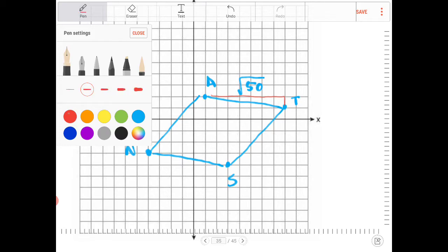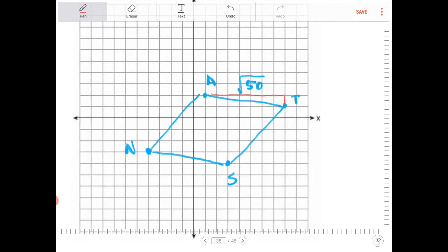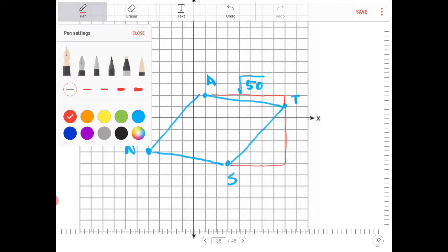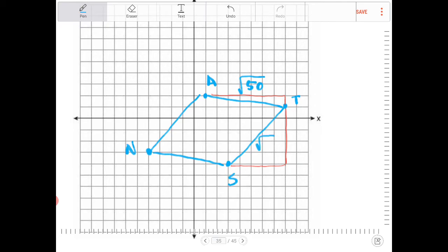And doing this again, going from T to S, I'm going 2, 4, 5, right? 5 down, and then 2, 4, 5, and 5 across. So what is that? So that would be square root of 50 again, right? Because 5 squared plus 5 squared is 25 plus 25. So that's 50.